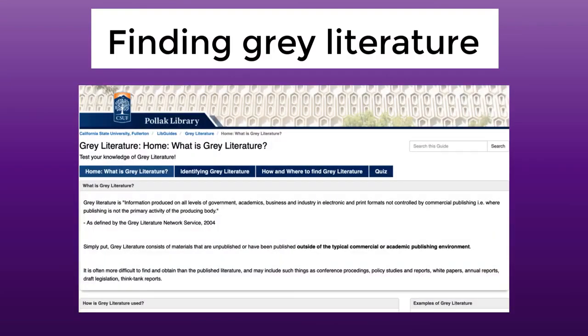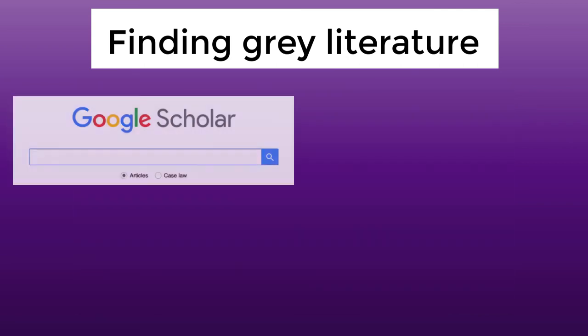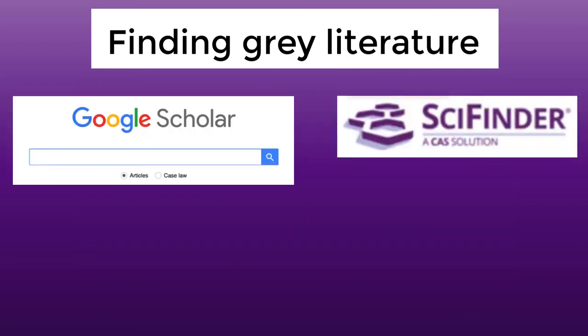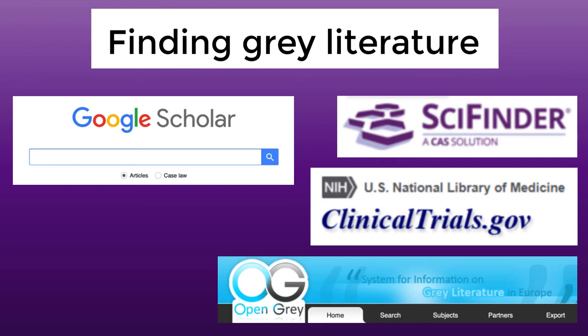There are a number of ways to locate gray literature. Look to the third page of this guide, 'How and Where to Find Gray Literature,' for a list of repositories and search engines sorted by type. These can include broad search engines such as Google, as well as resources dedicated just to finding gray literature.